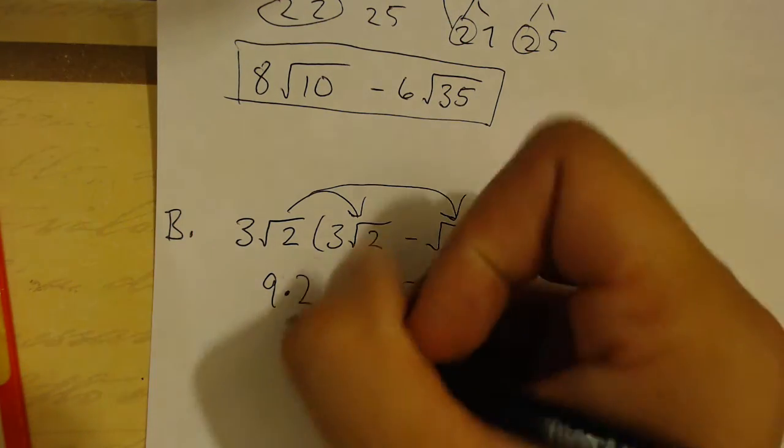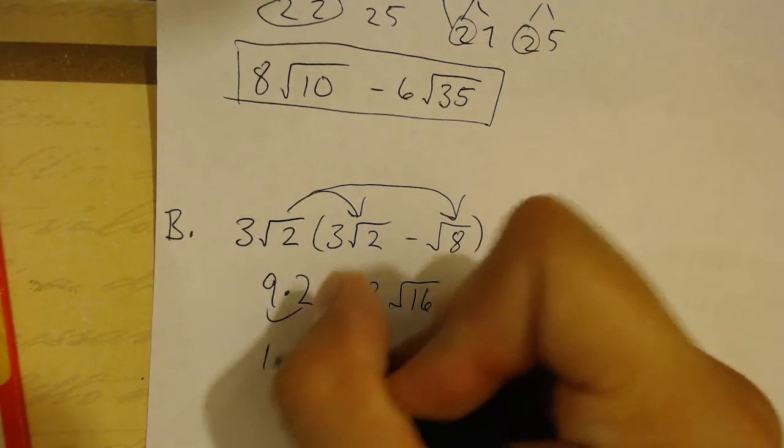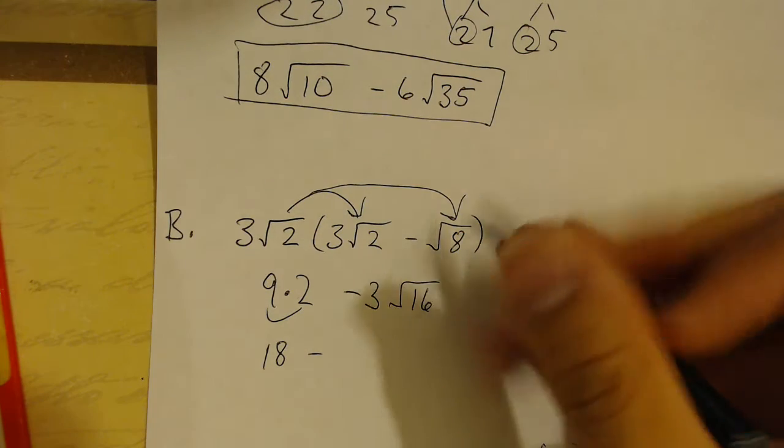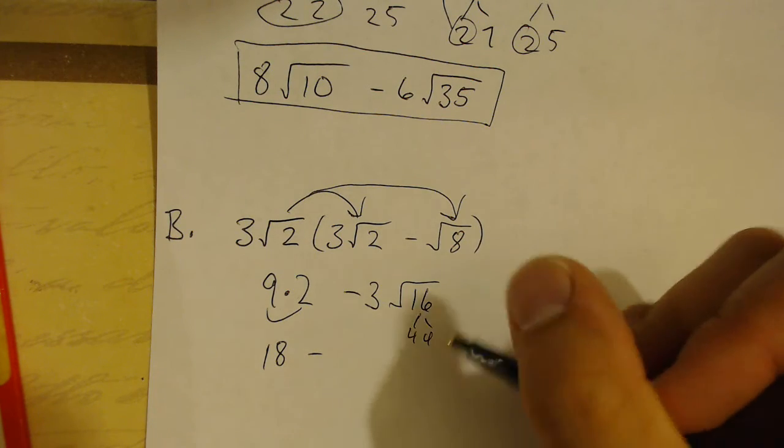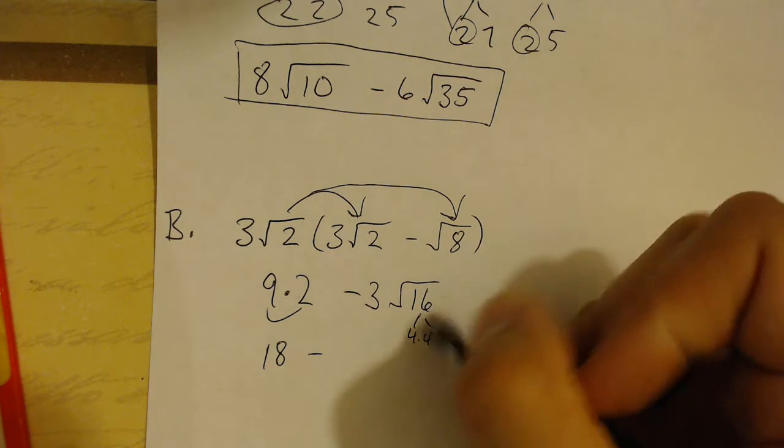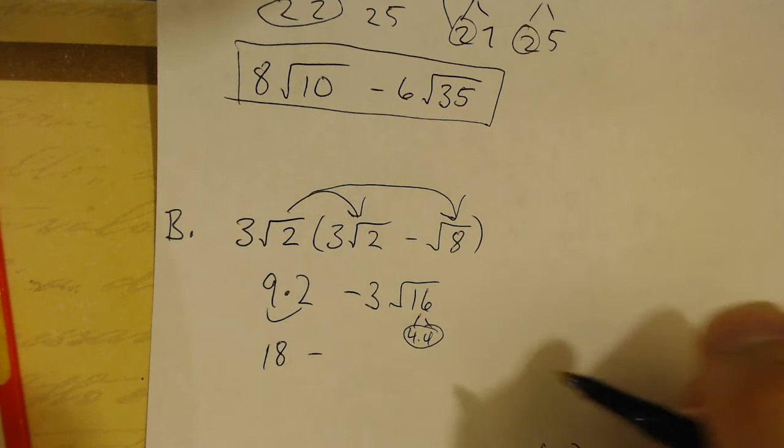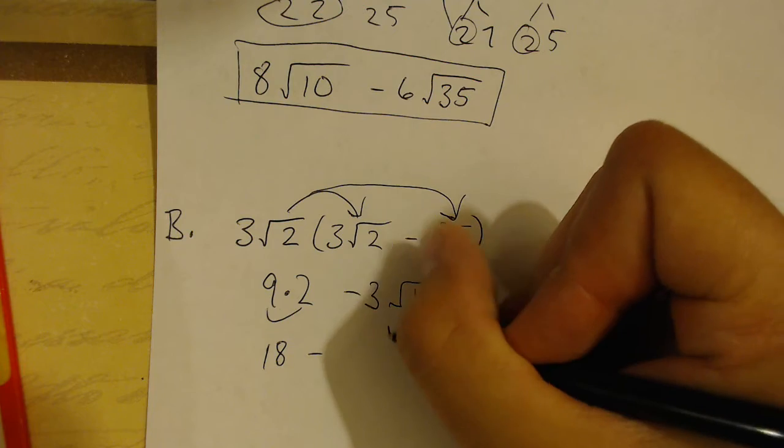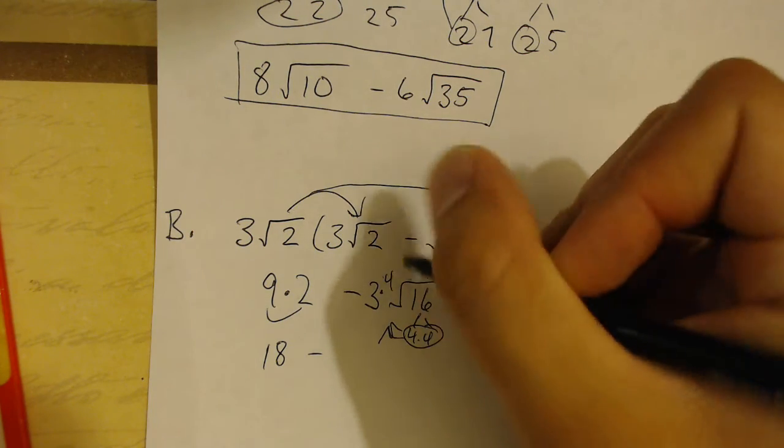From here, I'm going to keep simplifying. 9 and 2 combine to become 18. And then square root of 16 can factor into 4 times 4. And I'm not down at my primes yet, but I see I've got a pair. So, I can go ahead and circle that pair immediately.